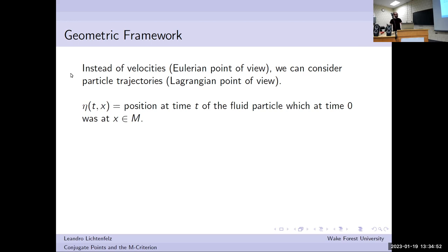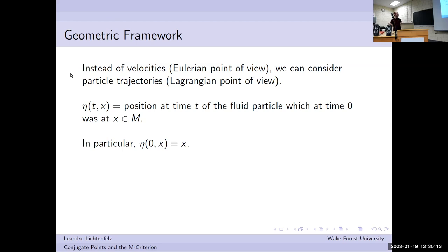Think of M as a fluid vessel where the fluid is flowing. Someone comes in at time zero and labels all the particles by some x. Then eta of t and x describes where that particle labeled x ended up at time t. If you plug in t equals zero, you just get x itself because no one has had any time to move yet. That's why we say these curves start at the identity.